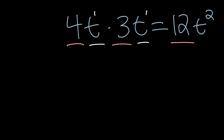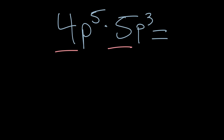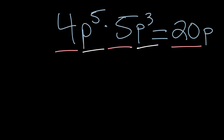Once you get into the rhythm these become pretty easy. What if we had 4P to the fifth power times 5P to the third power? We notice the pattern: always multiply the coefficients — four times five equals 20 — and always add the exponents — P to the fifth plus P to the third gives P to the eighth. So we multiply 4 and 5 to get 20, and add 5 and 3 to get 8, giving 20P to the eighth.